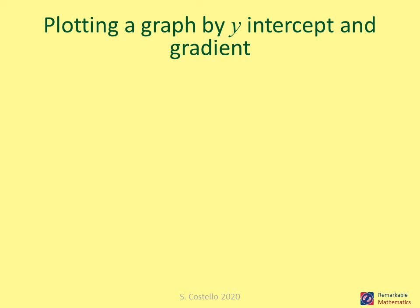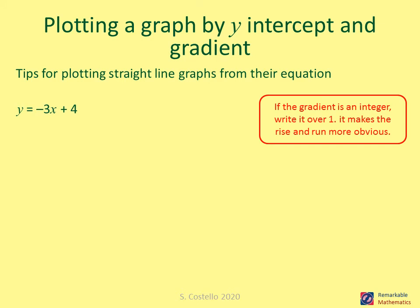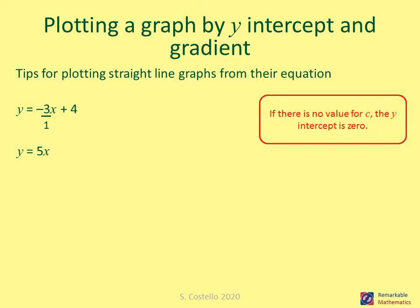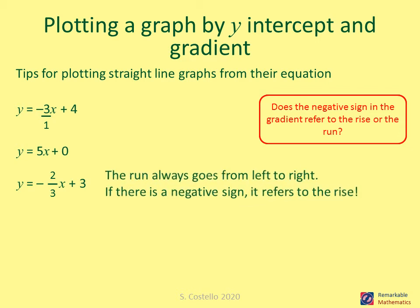Top tips for plotting by y-intercept and gradient. If the gradient is an integer, write it over one to make the rise and run clearer — for example y equals minus 3x plus 4 becomes rise minus three, run one. If there's no value for c, the y-intercept is zero. For a gradient like minus two over three, the negative sign always refers to the rise, since the run always goes from left to right and is always positive.